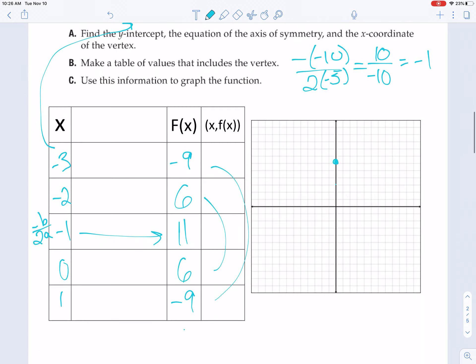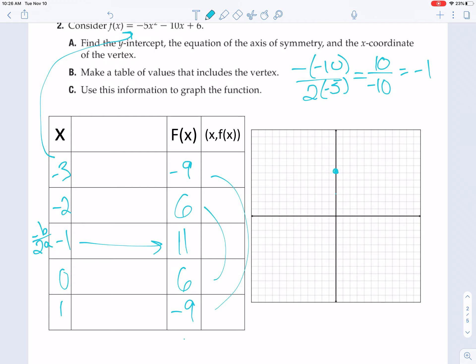So plot all these points. Negative 3, negative 9, 1, 2, 3, 4, 5, 6. Negative 2, 6. Negative 1, 11. 0, 6. Oh hey, conveniently, that's right where I already knew the y-intercept was going to be. Funny how that happened. And then 1, negative 9. Connect the dots in as smooth of a curve as you can. FYI, delta math does the curve drawing for you, which is super awesome. And there it is.